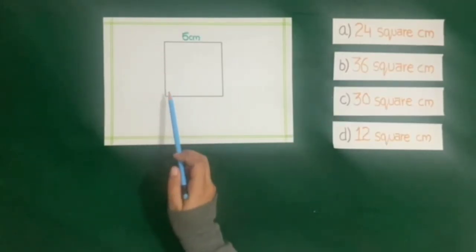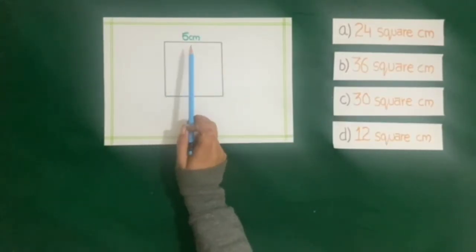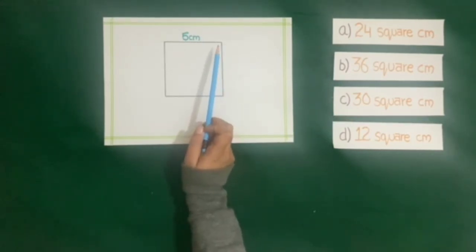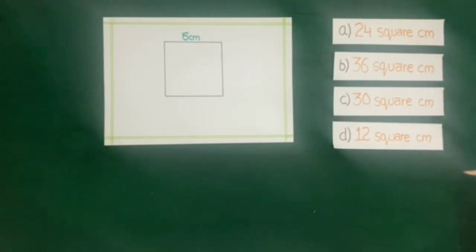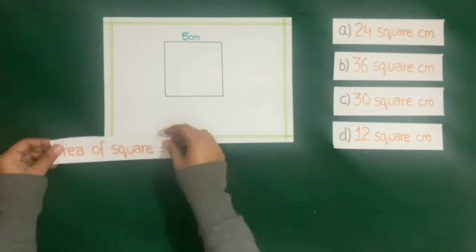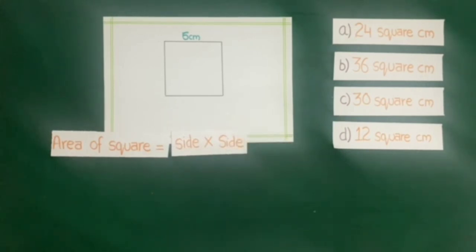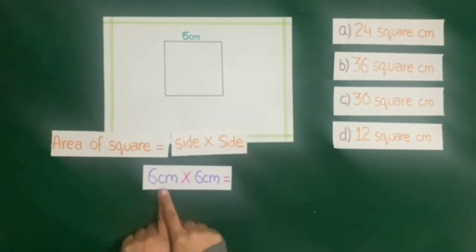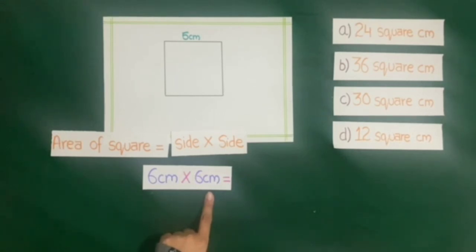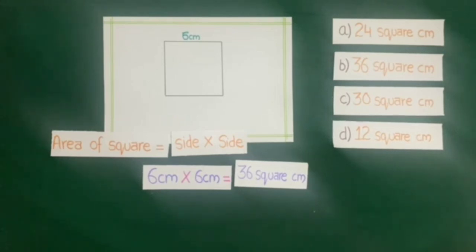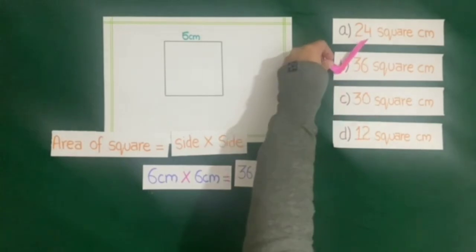Next question: a square is given whose side is 6 cm. We have to find the area of this square. Four answers are given and we will choose the correct answer. We know that the area of a square is equal to side multiplied by side. So we will multiply 6 cm by 6 cm, which is equal to 36 square cm. The correct answer is B, that is 36 square cm.